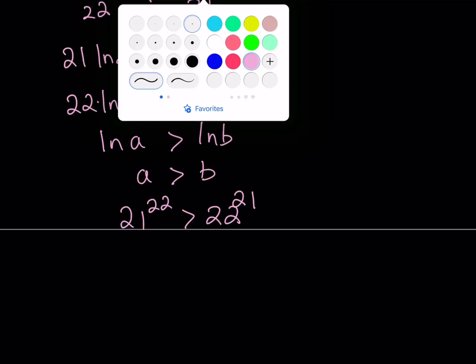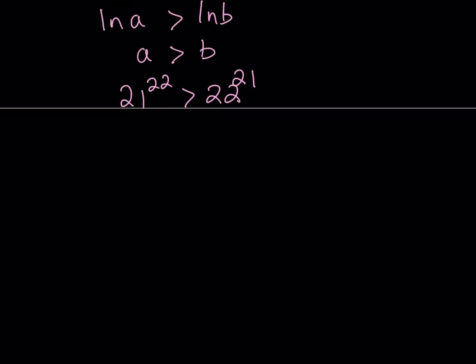Now, let's talk about a general result. I wanted to talk about a general result here, and this is what it is. In general, we can safely say that if x is greater than or equal to e, then x to the power of x plus 1 is going to be greater than x plus 1 to the power of x. In other words, the number with the smaller base is actually greater.